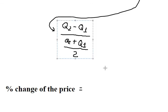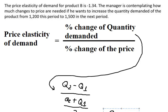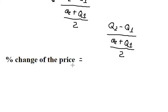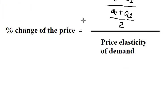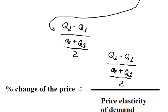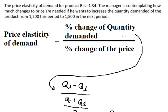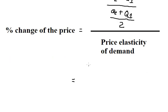Percentage change of the price equals quantity two minus quantity one over quantity two plus quantity one over two. So we put all the numbers together: quantity number two is 1,500 minus 1,200.